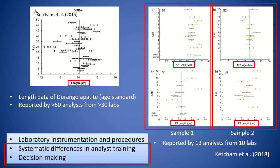Over the last decade, several interlaboratory experiments have been carried out to investigate the reproducibility of fission track data. The results show a high degree of scatter due to differences in laboratory instrument